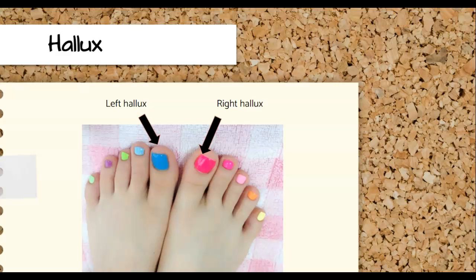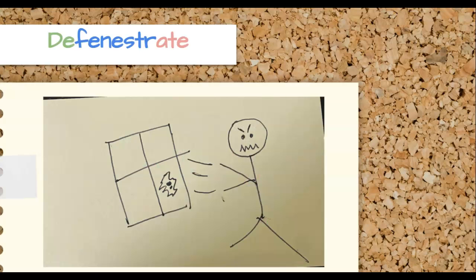So this poor little boy still has borborygmus. The cullet is all over the floor where mom dropped it when she stubbed her hallux. And this is not turning into a very good afternoon. The boy is frustrated. Mom is frustrated. The cullet is everywhere on the floor, and they're just trying to pick up all this broken glass for recycling. Really, all they want to do is throw it out the window — just throw it out the window. She wants to defenestrate it because she is so frustrated.